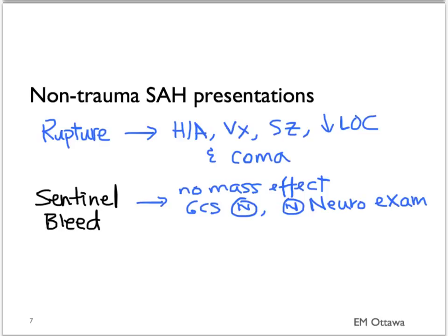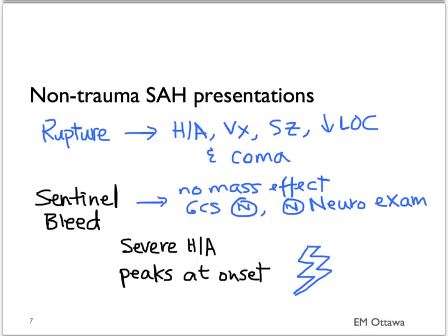On history, a sentinel bleed will present as a severe headache that peaks at its onset, also known as a thunderclap headache. The patient might also complain of neck pain, nausea, and vomiting.